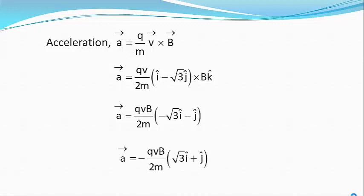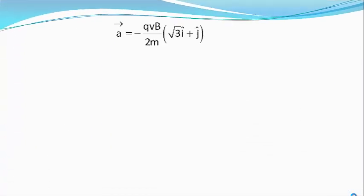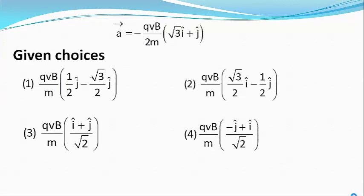Or a vector equals minus qv divided by 2m bracket root 3 i cap plus j cap. This is the value of our acceleration. Unfortunately, this answer does not match with any of the four given choices and hence it is a bonus question.